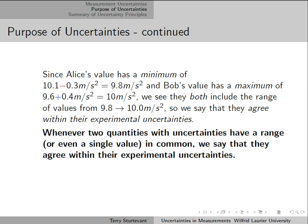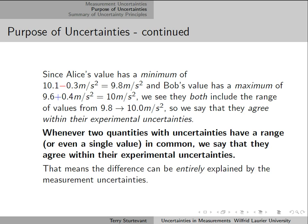Whenever two quantities with uncertainties have a range or even a single value in common, we say that they agree within their experimental uncertainties. That means the difference between them can be entirely explained by the measurement uncertainties.